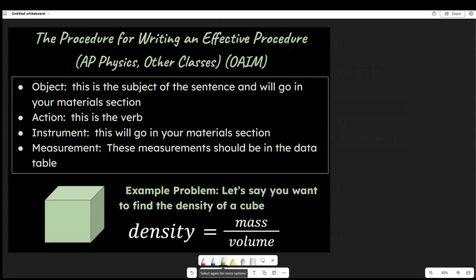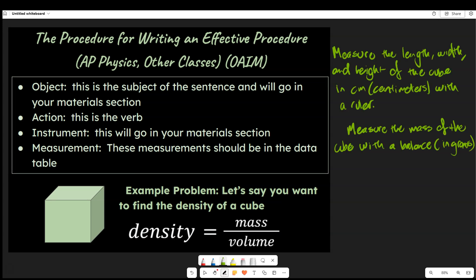So we can measure the length, width, and height of the cube in centimeters with a ruler. And secondly, we can measure the mass of the cube with a balance in grams. And if we want to think about what we're doing here, we're going to say our action. I could underline that in red and show you that we're talking about measuring.